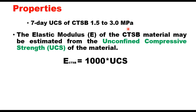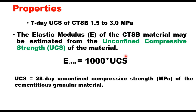In the case of the CTSB layer, the modulus can be estimated by the equation: E = 1000 × UCS, where UCS is the 28-day unconfined compressive strength of the cement-treated granular material.